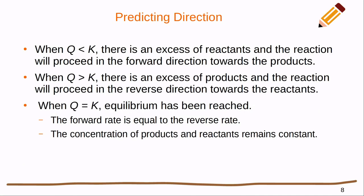To predict the direction of a reaction: when Q is less than K, there is an excess of reactants and the reaction will proceed forward toward the products. When Q is greater than K, there is an excess of products and the reaction will proceed in reverse toward the reactants. When Q equals K, the system is at equilibrium — forward and reverse rates are equal and concentrations remain constant.